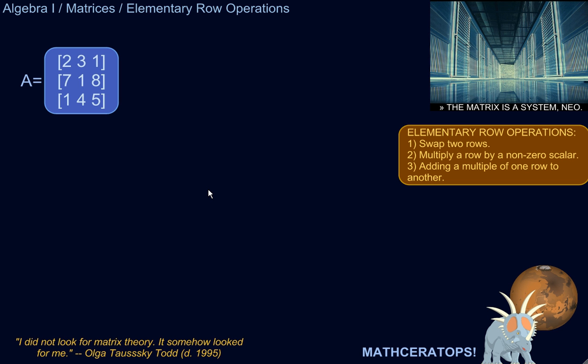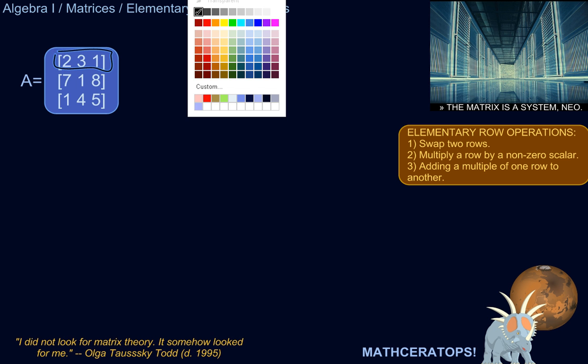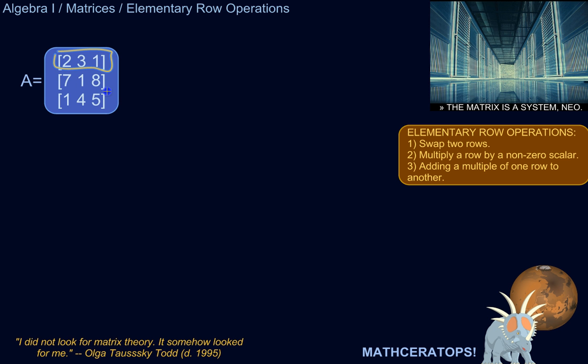So there's three elementary row operations, three basic things you can do to the rows of a matrix. So actually, let me just point out what the rows are. That's a row, that's a row, and that's a row. So there's three rows in this matrix A.